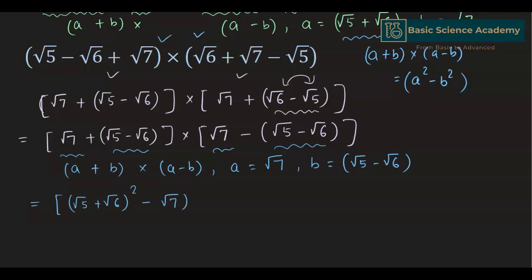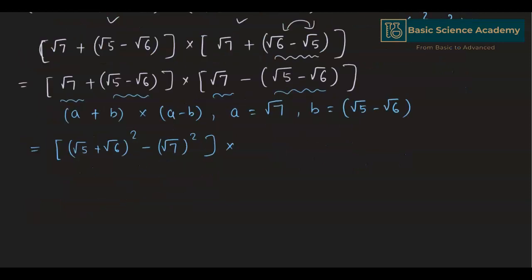For the third and fourth terms, a equals √7, so a² = (√7)², and b equals (√5 - √6), so b² = (√5 - √6)².